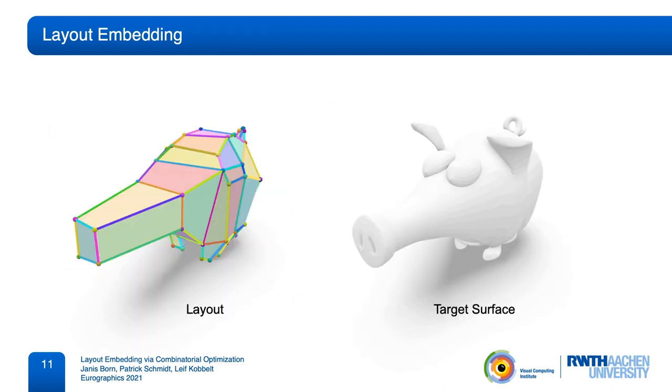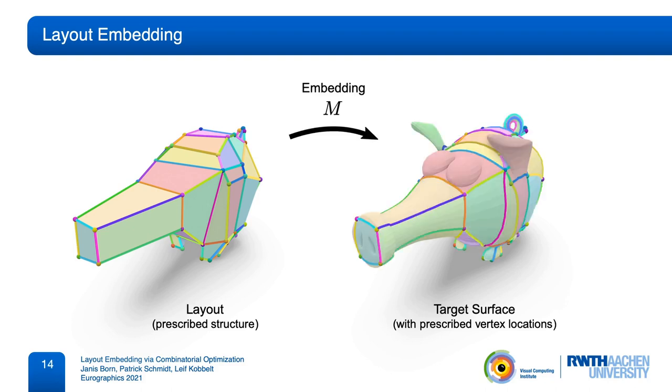For this reason, we are interested in the following problem setup. We are given a layout with a fixed prescribed structure. On the target surface, we have prescribed locations of the layout vertices. The task is then to find an injective embedding of the layout edges and faces into the target surface. For simply connected surfaces, this simply means that embedded edges don't intersect, and that the embedding maintains the ordering of edges around layout vertices. Although we consider a fixed layout and fixed target vertex locations, this problem still has a large space of different solutions.